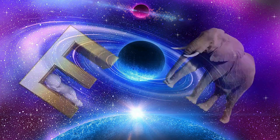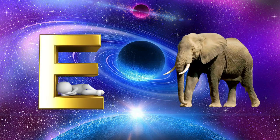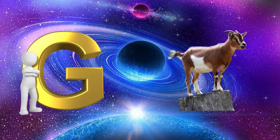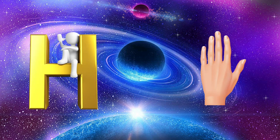E is for elephant, e-e-elephant. F is for frog, f-f-frog. G is for goat, g-g-goat. H is for hand, h-h-hand.